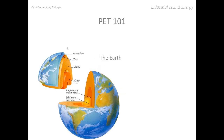Here we have a cutaway of the planet Earth. We'll start at the outside and work our way in. We have an atmosphere, which is a couple of miles thick. We have a crust, which we'll talk about more in just a moment. We have a mantle, which is several hundred miles thick. Beneath that we have a molten metal outer core and then a solid metal inner core.